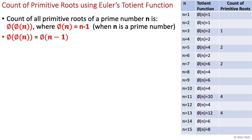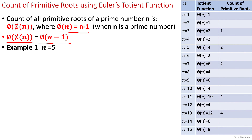To count all the primitive roots of a prime number n, we can do it easily using Euler's totient function. The formula is φ(φ(n)). Since the number is prime, φ(n) equals n minus 1, so the final formula for counting all primitive roots is φ(n minus 1).